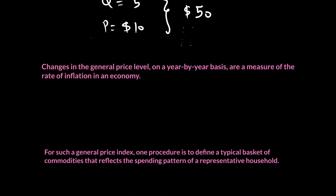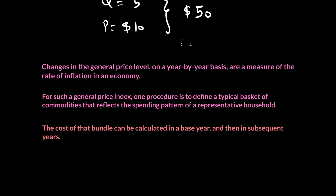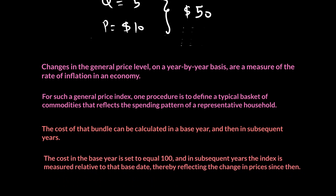For a general price level, one procedure is to create a basket of commodities that reflects the spending pattern of a representative household. We look at their typical consumption of goods and services to create this basket, then observe prices in a particular base year — the starting point for calculating inflation. In subsequent years, we look at how prices are changing. The cost in the base year is set to 100, and we track how the index behaves relative to the base date to find year-to-year inflation.